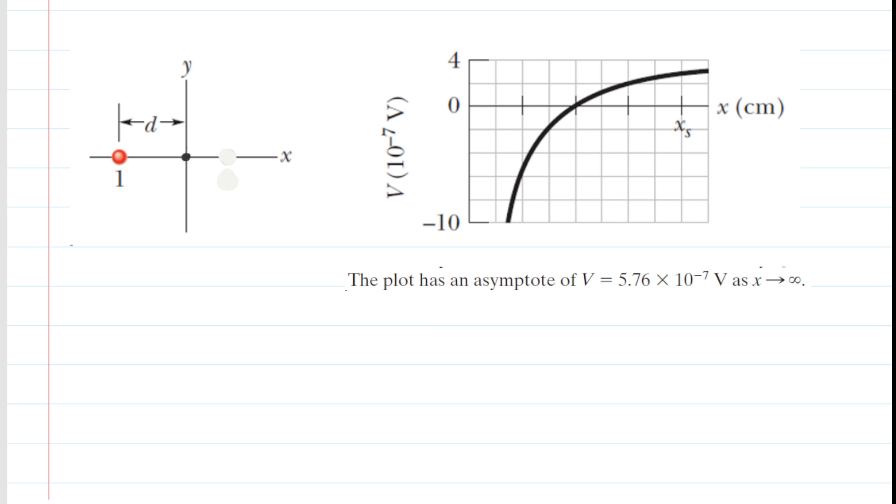It's basically gone, essentially. So we're just going to remove it from the figure. And when we remove it from the figure, the only charge now that's producing electric potential at the origin is Q1.